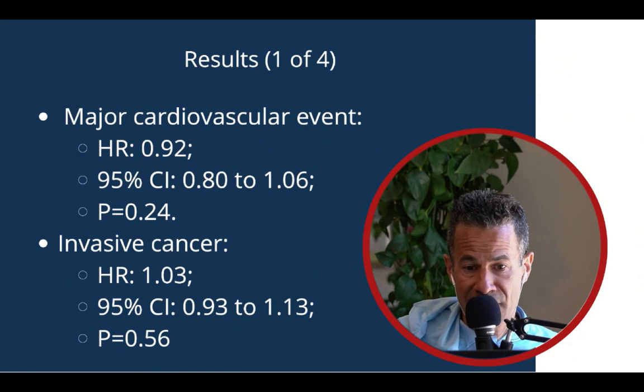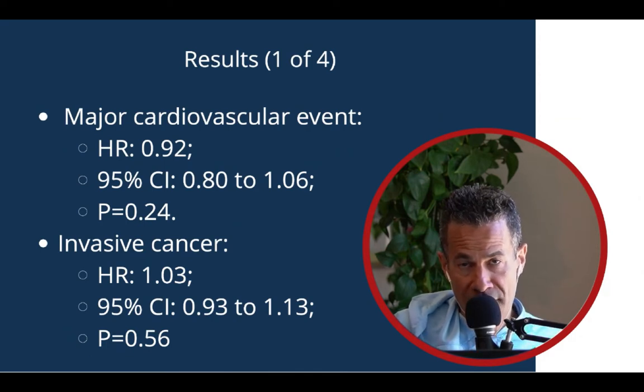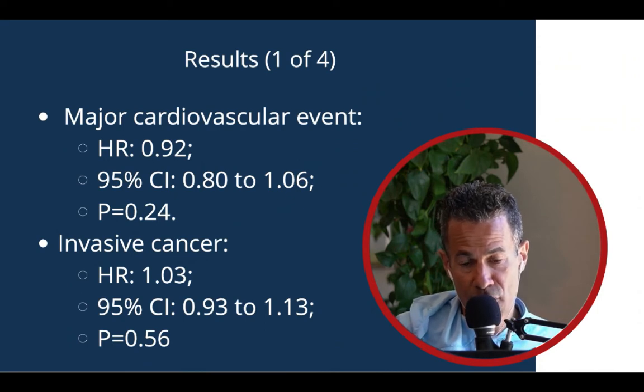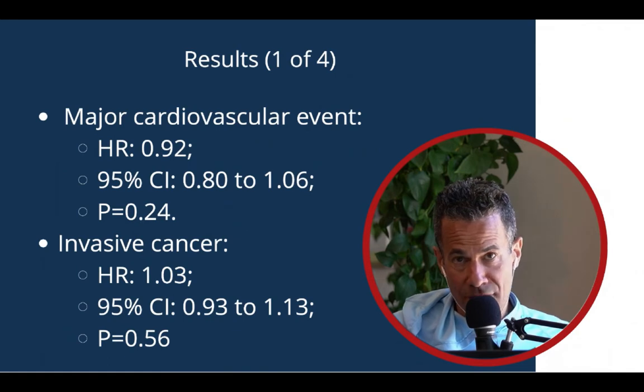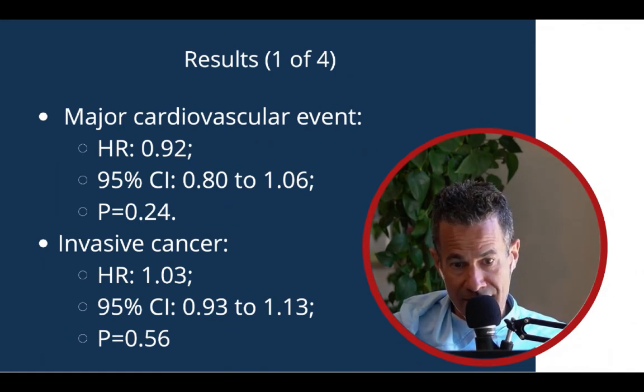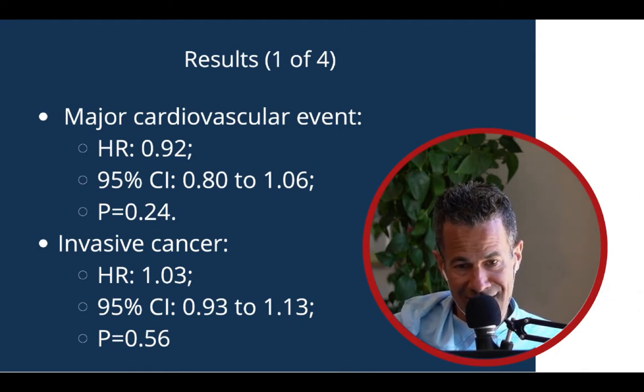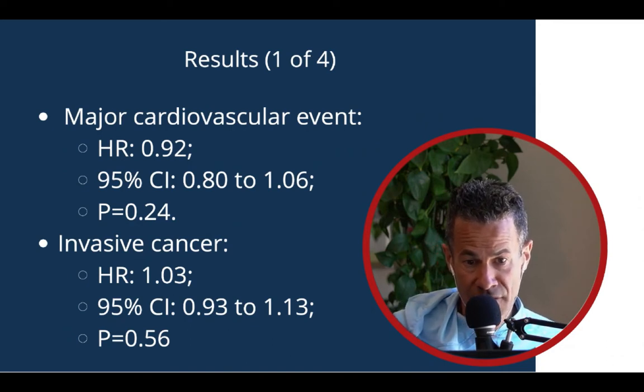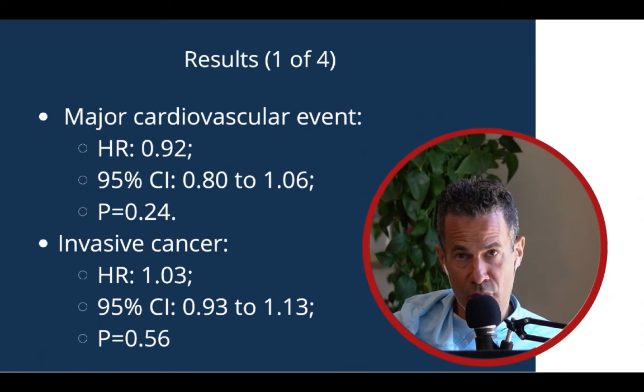Here's the question of invasive cancer. The hazard ratio is 1.03, which would suggest that taking omega-3s would actually increase your risk of cancer compared to not taking them. But the confidence interval crosses one, 0.93 to 1.13, so we have reason to doubt this increased risk from omega-3s. Furthermore, the p-value is greater than 0.05, so there's a 56% chance that this result is a random occurrence. This means that omega-3s did not affect major cardiovascular events or invasive cancer. That was the primary endpoint of the study.